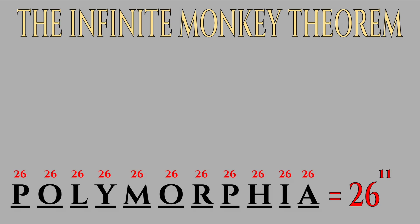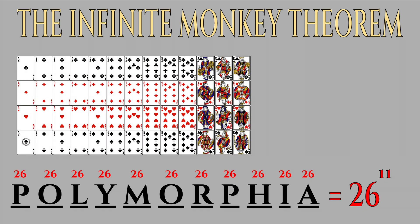I also learned in calculus class that 1 over x to the power of n will converge to 0 if x is greater than 1 as n approaches infinity. Even though 4 million isn't close to infinity, what if we were working with a greater value? For example, what if we gave the monkeys playing cards instead of typewriters and asked them to lay out all possible arrangements of the deck of 52 cards? The value of 52 factorial is around 8 times 10 to the power of 67.